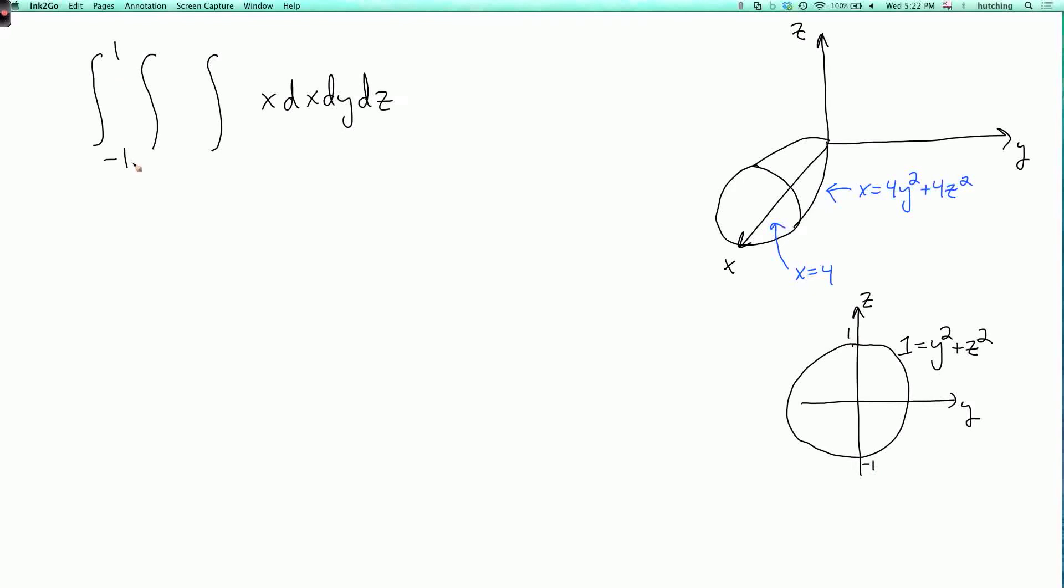Now, when you fix z, what is the possible range of y? Well, we've seen examples like this before. So we are integrating over the unit disk. We can write this equation as y equals plus or minus the square root of 1 minus z squared. So that tells us that the minimum possible value of y is minus the square root of 1 minus z squared and the maximum possible value of y is plus the square root of 1 minus z squared.